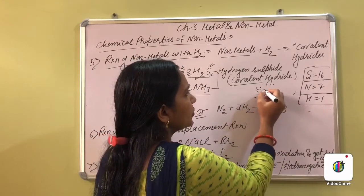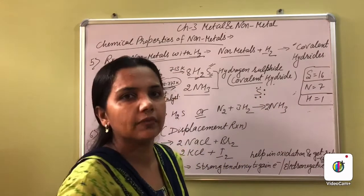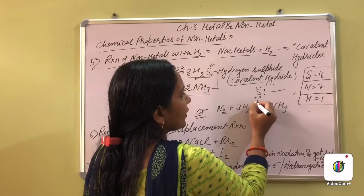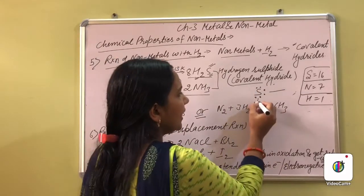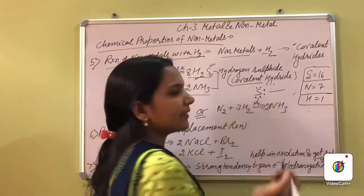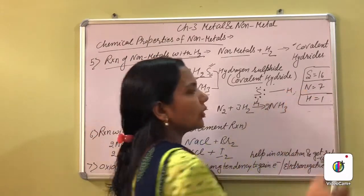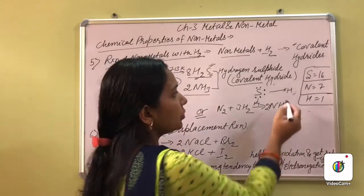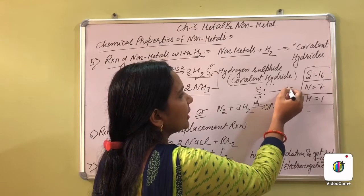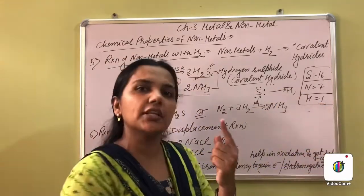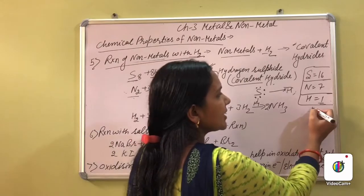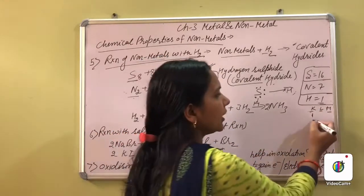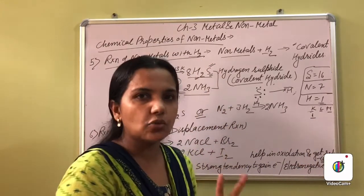These 6 electrons are present in the outermost shell of sulfur. Now sulfur will share one electron with hydrogen. Suppose hydrogen is also present on this side, having only one electron. When hydrogen needs to complete its octet — hydrogen's electronic configuration has only one electron in the first shell — it needs two electrons to complete it.